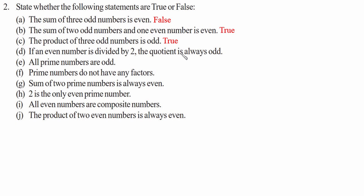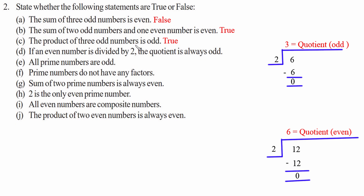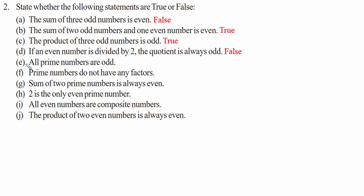However, to prove statement d wrong, we check another case: 12 divided by 2 gives 6, which is an even number as the quotient. Therefore statement d is false. Statement e — all prime numbers are odd.